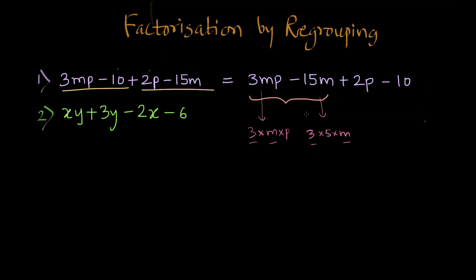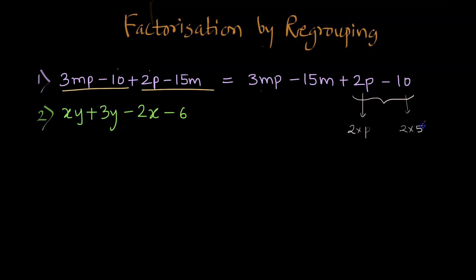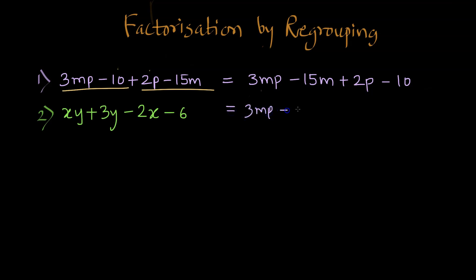That is great news — we can factorize these two terms. Now let us look at the other two terms, 2P and minus 10. 2P can be written as 2 times P and 10 can be written as 2 times 5, so 2 is a common factor in both terms. Now let us write these in factorized form. 3MP minus 15M can be written as 3M times 5, because 3M is a factor present in the first term as well, giving us 3M times (P minus 5).